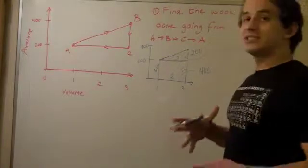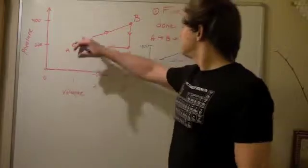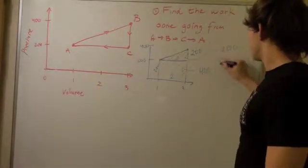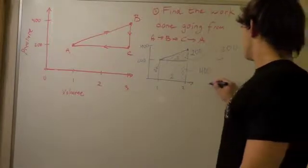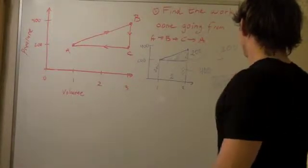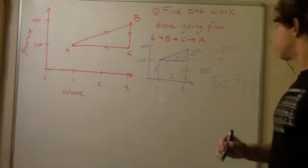So, the work done going from point A to point B is 200 plus 400, so it's 600 joules.